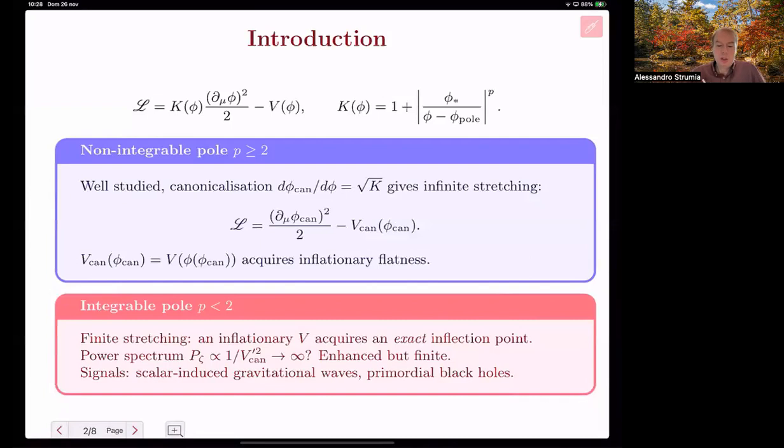The theory we consider is standard one-field inflation with a kinetic function that contains a normal term and a pole at some position with some width with some power p. If the power is bigger than 2, this has been well studied. Canonicalization means an infinite stretching of the potential that becomes good for inflation. We don't talk about this.